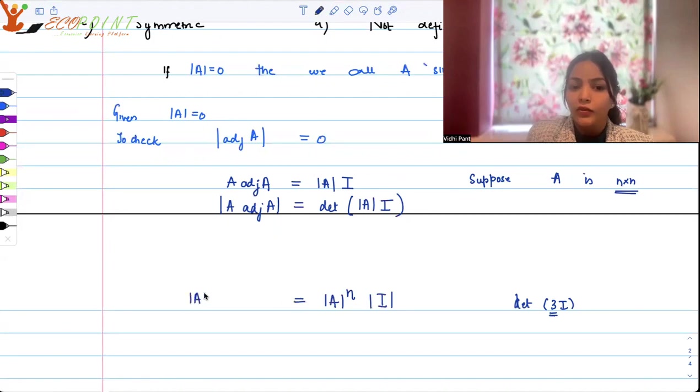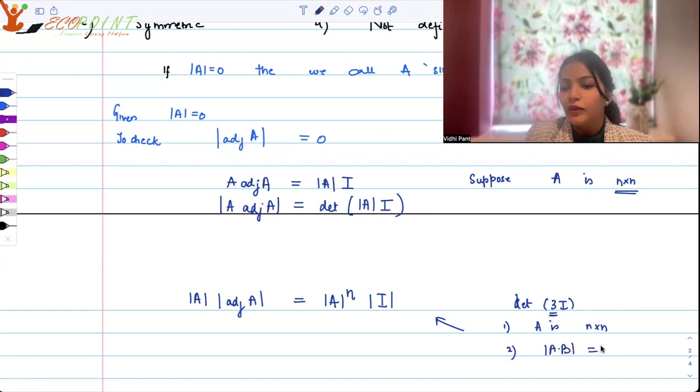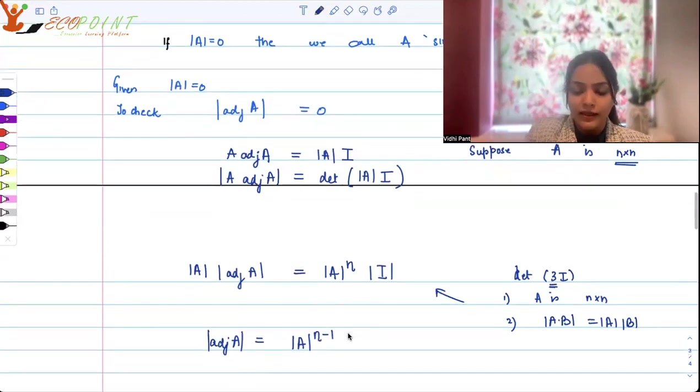And here we know the property of determinants that you can break the product. So what are we using? We are using two things here. Number one, we are using that A is order n. Number two, we are using that determinant of A into B is determinant A into determinant B. So hence what we get is that adjoint A, the determinant of adjoint A is nothing but determinant of A to the power n minus 1. A to the power n minus 1 because this determinant A and A to the power n will one of the powers will cancel out, right?